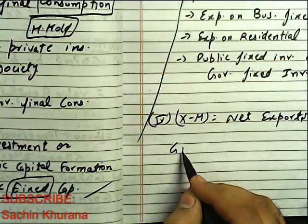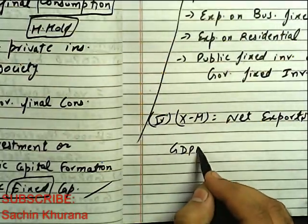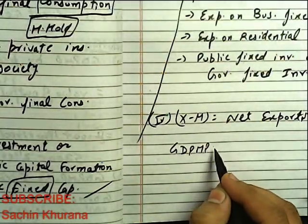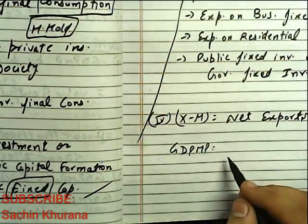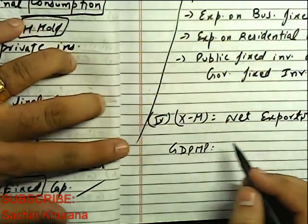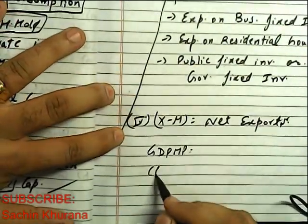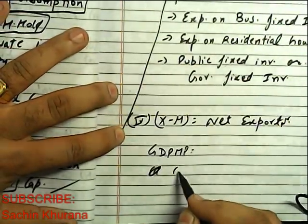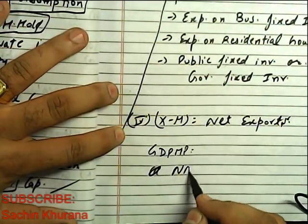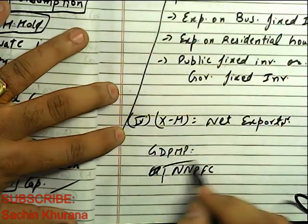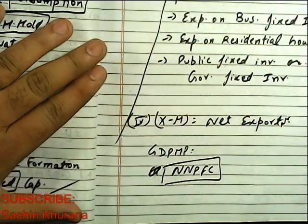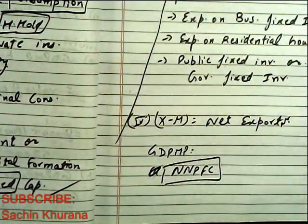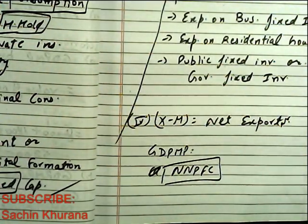Taking the total of all these components gives us GDPMP. How to further convert and calculate NNPFC from it — we have already discussed that in the previous video. Thank you and have a nice day.